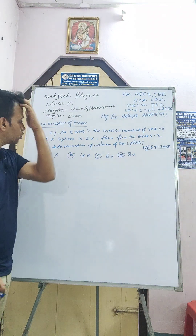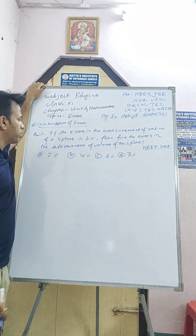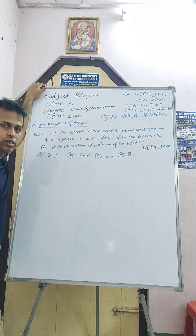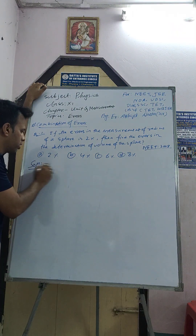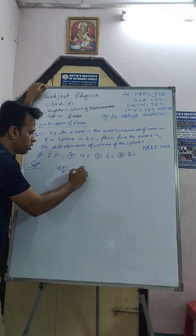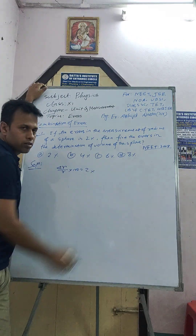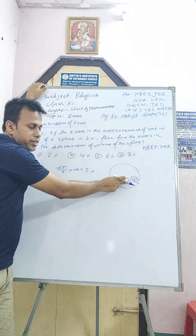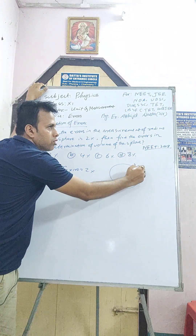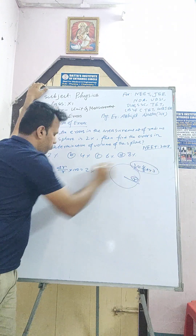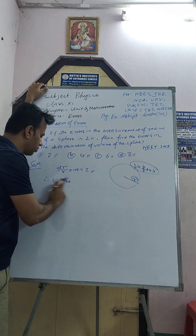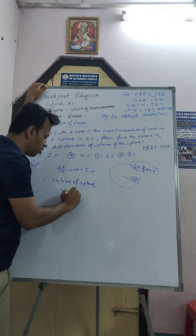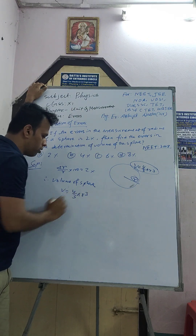Question 1 came from NEET 2008: if the error in the measurement of the radius of a sphere is 2%, find the error in the determination of the volume of the sphere. Given: percentage error in radius, del r by r into 100, is 2%. Since volume of sphere V equals 4 by 3 pi r cubed.